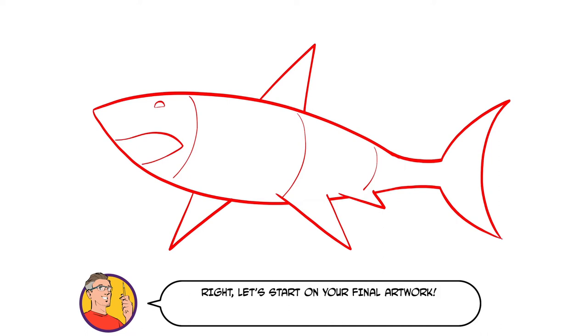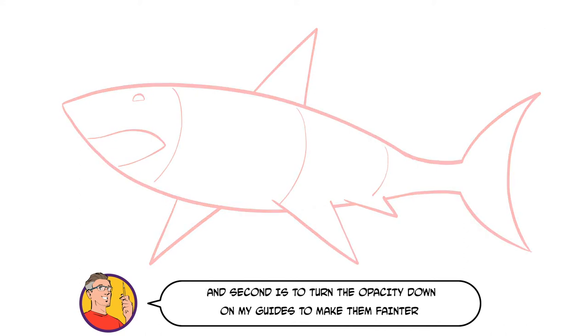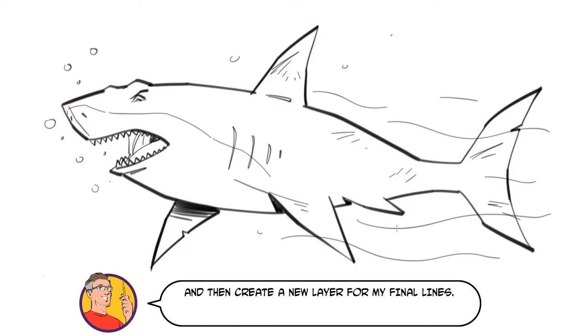Right, let's start on your final artwork. Because I work on a computer, I'm going to do two things here. One is to zoom in a little so I can really get into the details, and second is to turn the opacity down on my guides to make them fainter and then create a new layer for my final lines.